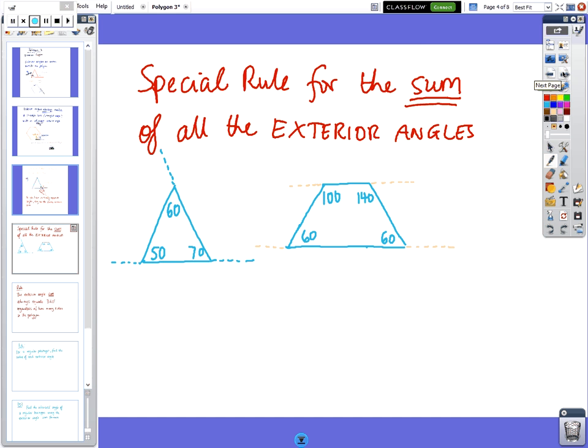OK, so there's a special rule for the sum. Now the sum just means to add them up. OK, and so what we're going to do is, I've just got two shapes here, one's a triangle and one's a quadrilateral. I want you to find the angles alongside, and then I want you to add them up and see what you find. And so pause the tape, and can you have a go at that right now please.